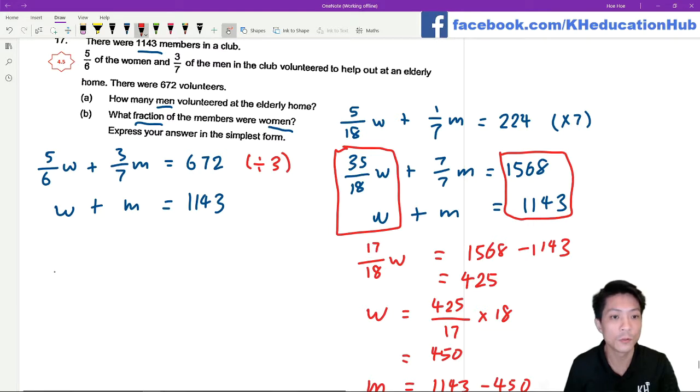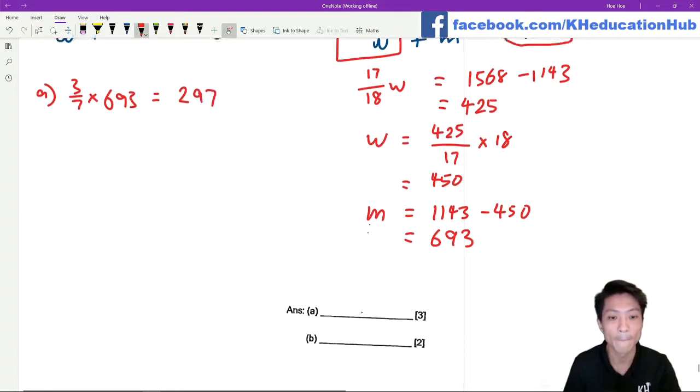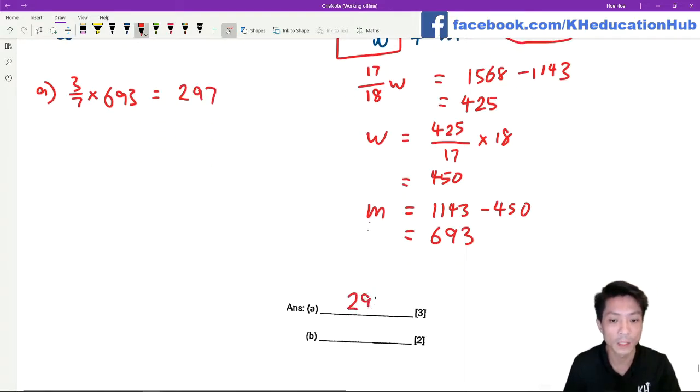Part A is asking you to find how many men volunteered at the elderly home. 3 over 7 of the men. For part A, I'm gonna use 3 over 7 of the men, which is 297. This is the answer for part A.